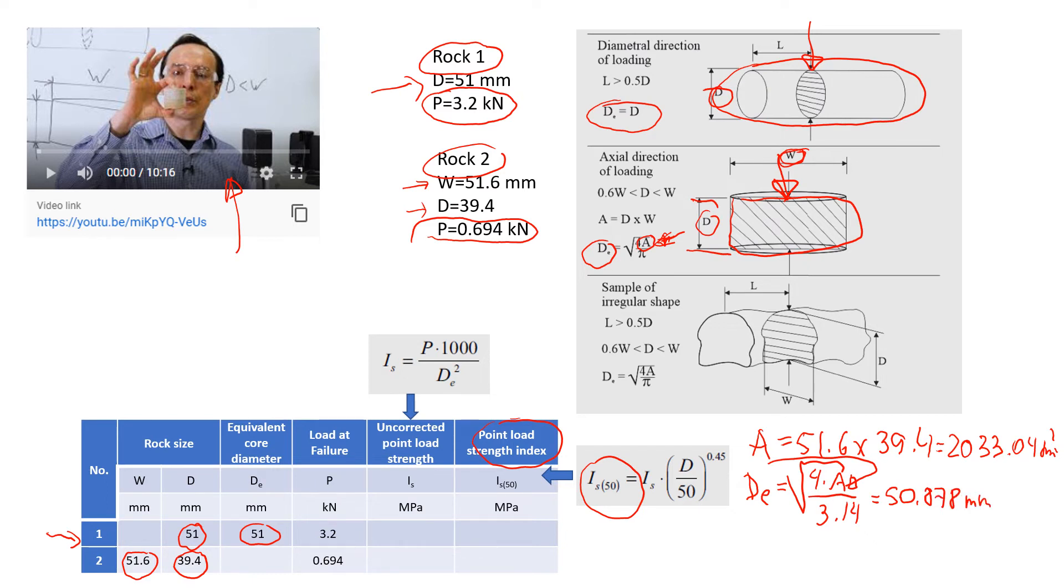I'm going to write here 50.78. Load to failure we already know—this is what we get from the test: 3.2 and 0.694 for two different rocks.